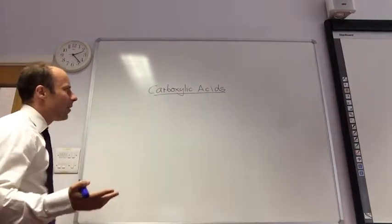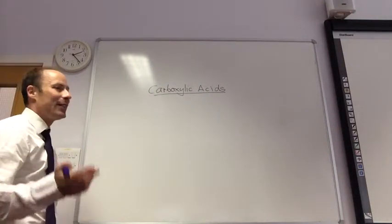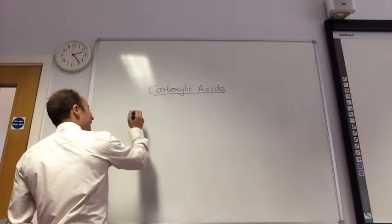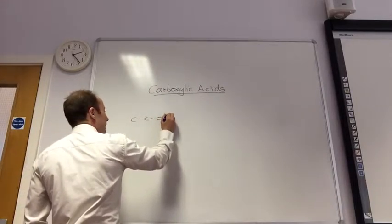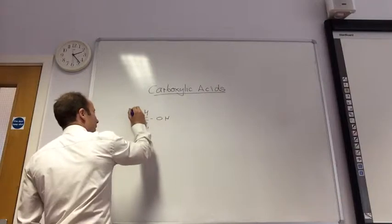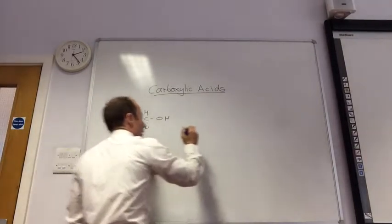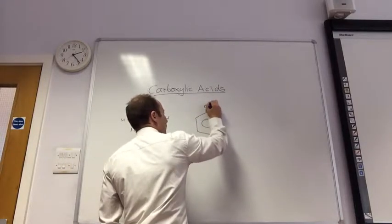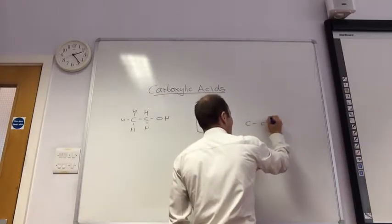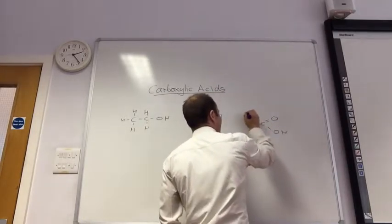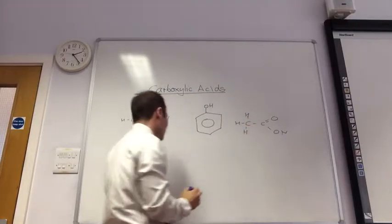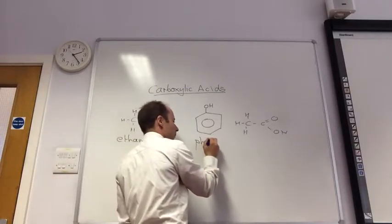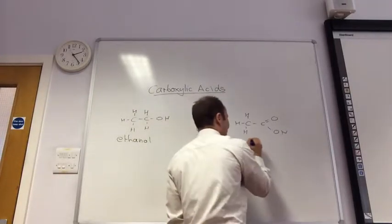Let's think about why carboxylic acids react the way they do. To do that, we're going to compare three organic compounds. The first one is ethanol, the next one is phenol, and the final one is ethanoic acid.